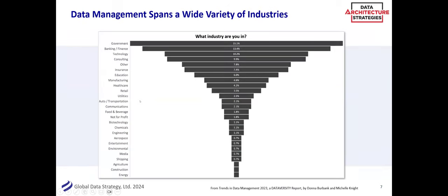Not every organization is a for-profit retailer — there are government agencies and many other types. The span of different industries is interesting. Back in the day, it seemed like the only folks really doing data management were finance and government, and they're still the top two. But what's exciting is the growth in variety of industries. In our practice, we've worked with museums, nonprofits, retail companies, media companies, schools, and government agencies — everybody is doing data now, not just the big ones.